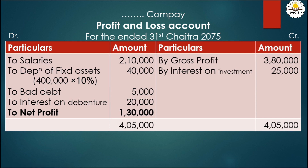Bad debts 5,000 on the debit side. Interest on debentures 20,000 on the debit side. On the credit side: interest on investment 25,000 from the question. After posting all P&L account items, the credit side totals with gross profit. The balancing figure gives us the net profit, which is transferred to the appropriation account.